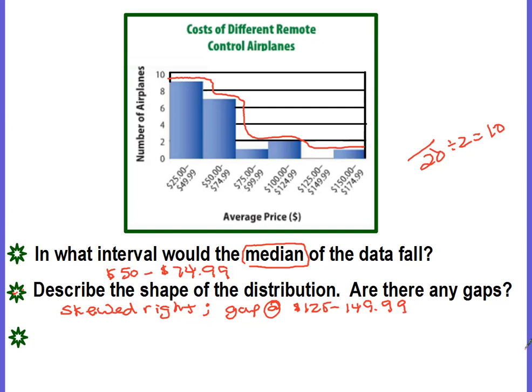And then there is a gap at $125 to $149.99. Is there a peak? Yeah. The tallest bar is at the $25 to $49.99. So you could say there's a peak at the $25 to $49.99 interval.